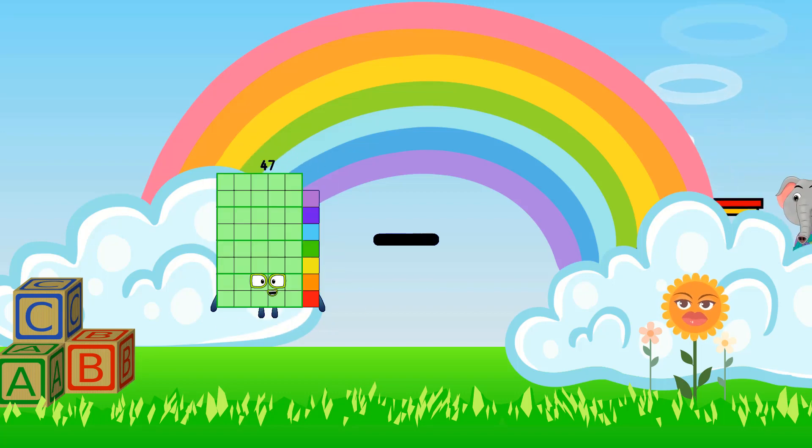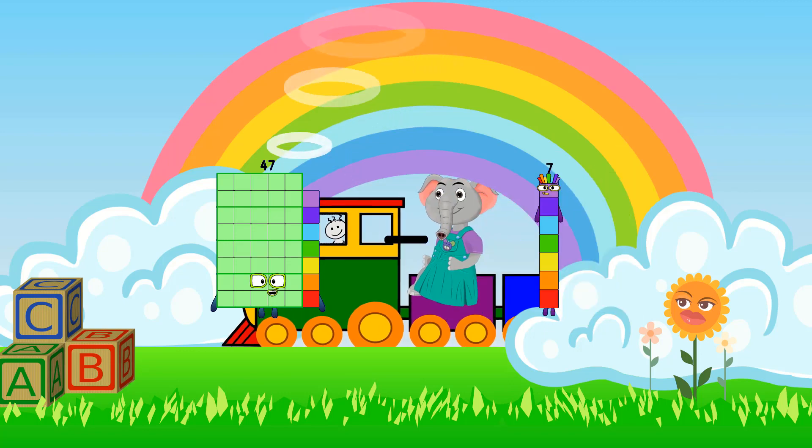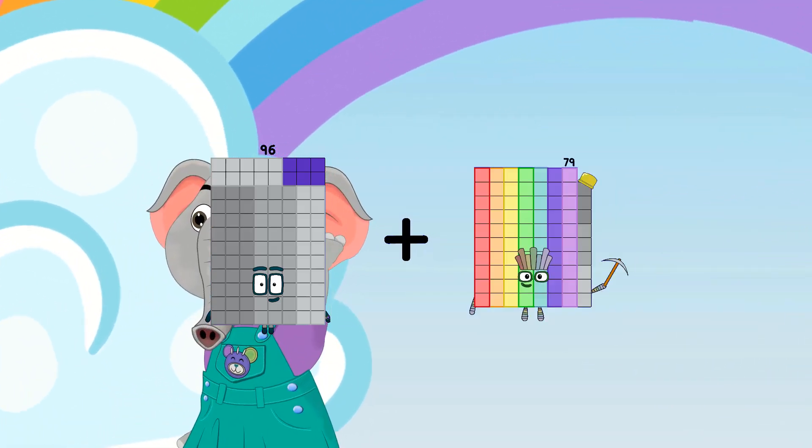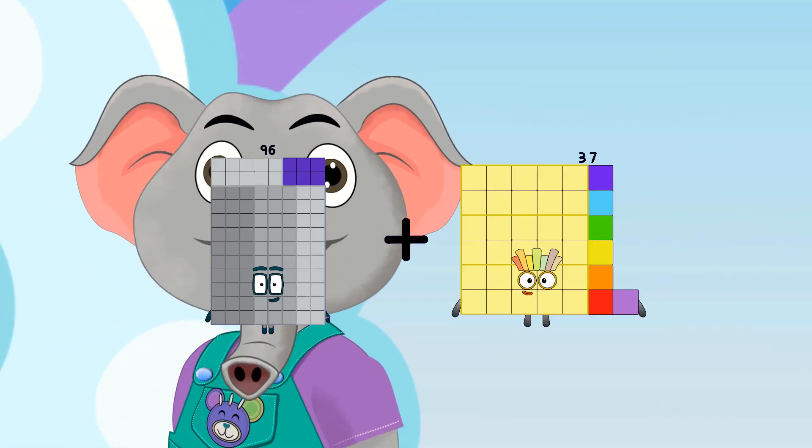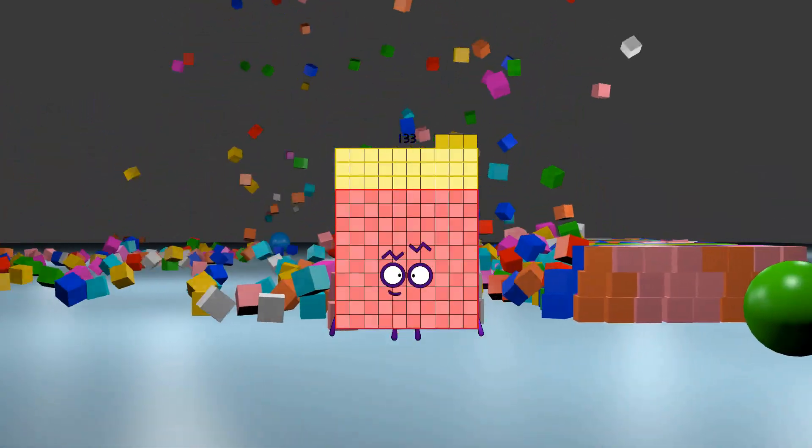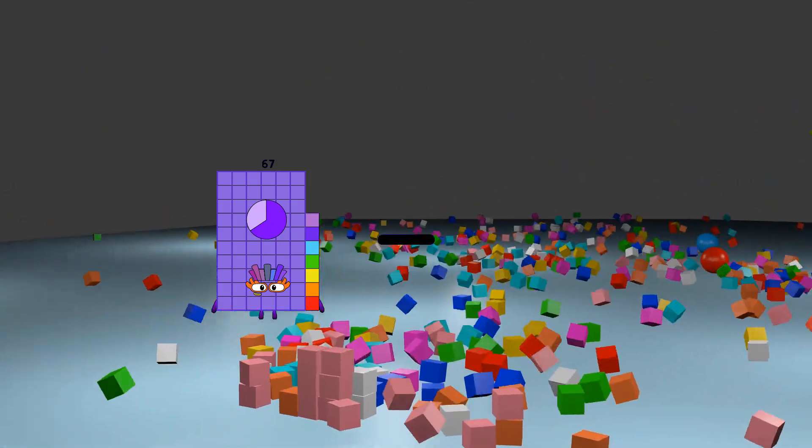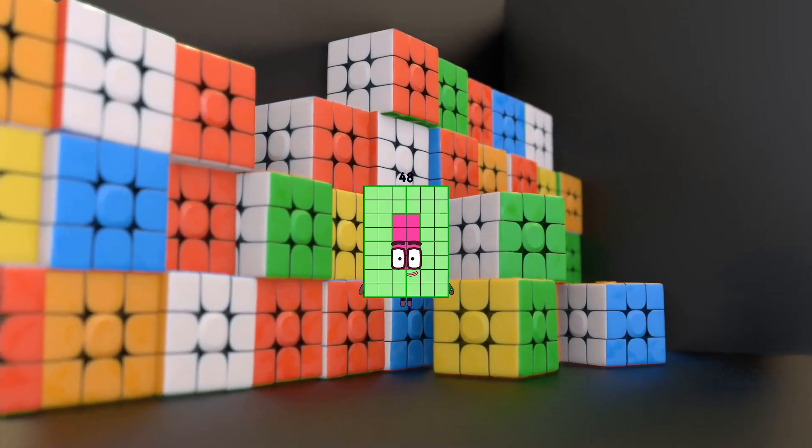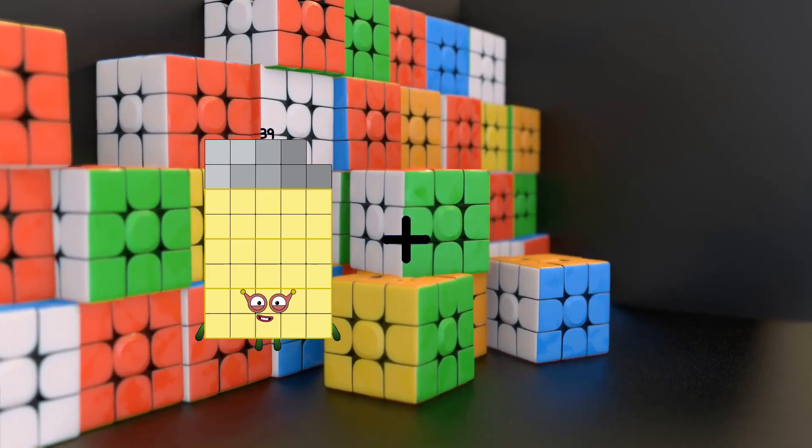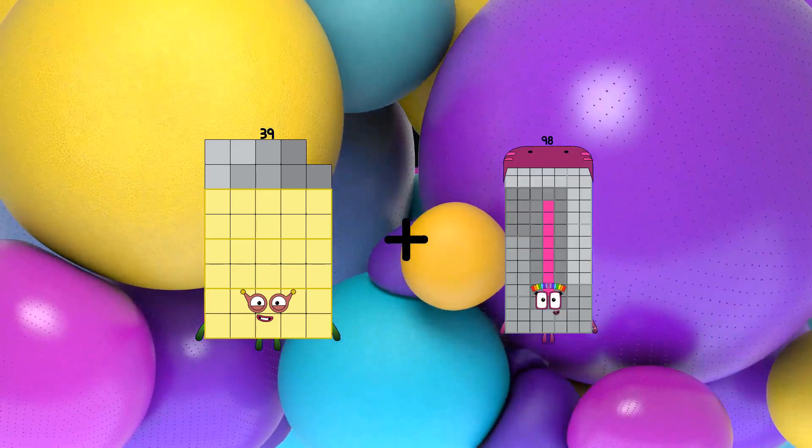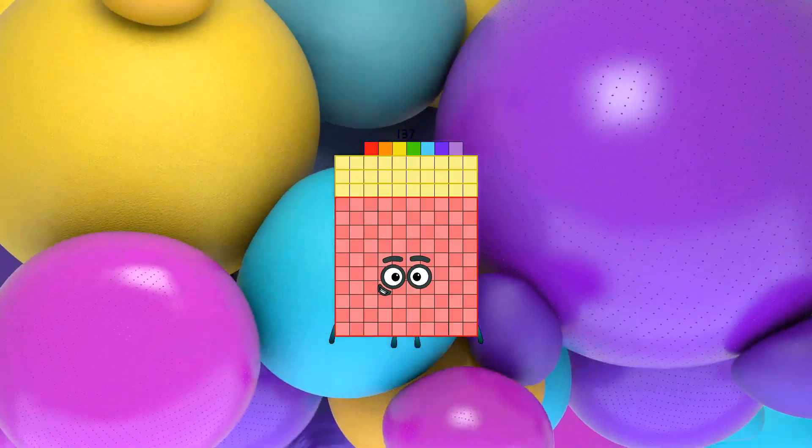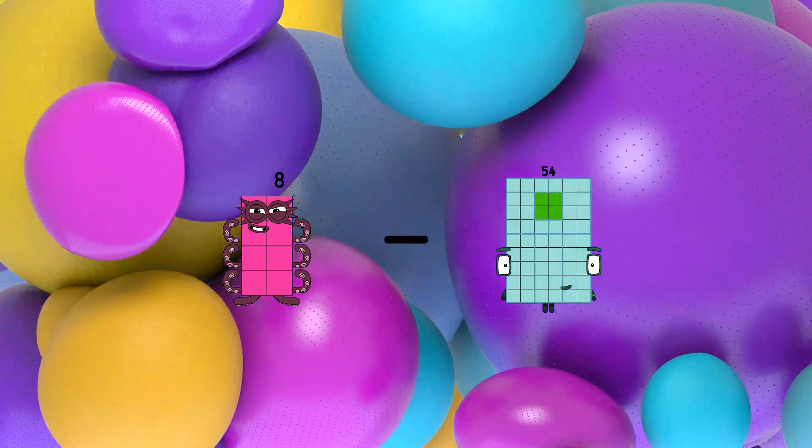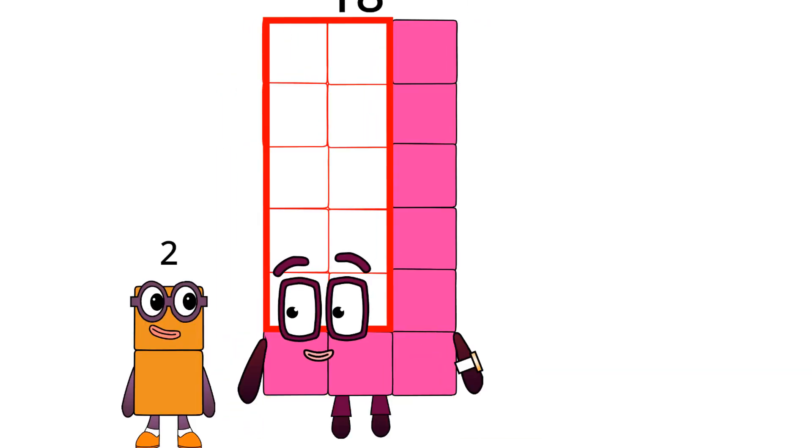47 minus 28 equals 19, 96 plus 37 equals 133, 67 minus 19 equals 48, 39 plus 98 equals 137, 8 minus 7 equals 1. 2.